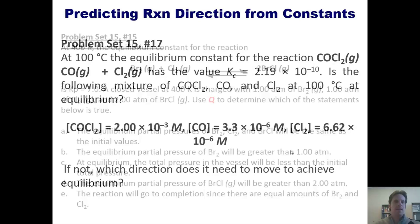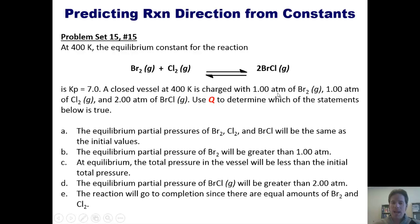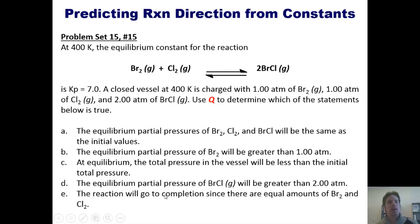Let's take a look at another problem. At 400 Kelvins, the equilibrium constant for this reaction is KP equals 7. That's an equilibrium constant with respect to pressure. A closed vessel at 400 K is charged with 1 atm of bromine, 1 atm of chlorine, and 2 atm of bromine chloride. Use Q to determine which of the following statements is true. We'll invite you to attempt to do it on your own. If you wish, you can click this link to a separate video in which I do it for you on the board.